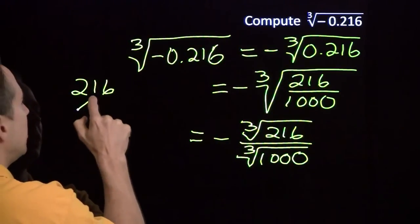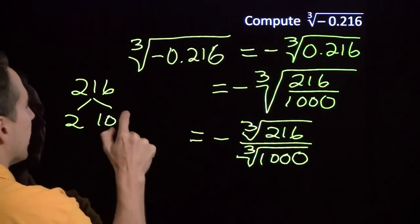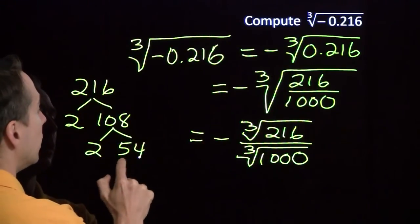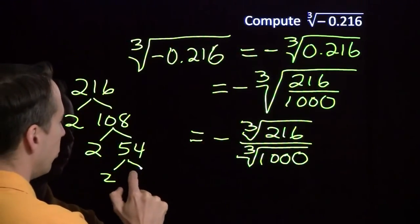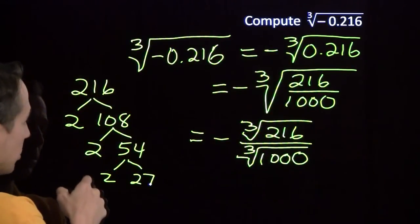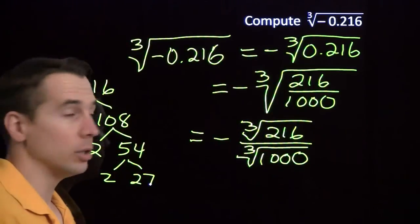Well, factor 216. Take out a factor of 2, take out another factor of 2, take out another factor of 2, and now we see that 216 is 2 times 2 times 2—that's 2 cubed—and 27 is 3 cubed.